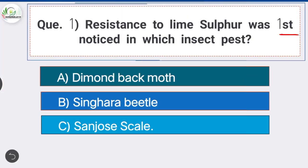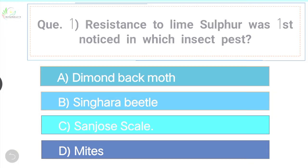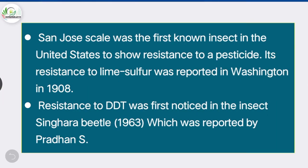Question 1: Resistance to lime sulfur was first noticed in which insect? Option C is the correct answer: San Jose scale. Resistance to lime sulfur was first noticed in the year 1908 in San Jose scale, the first known insect in the United States to show resistance to a pesticide.